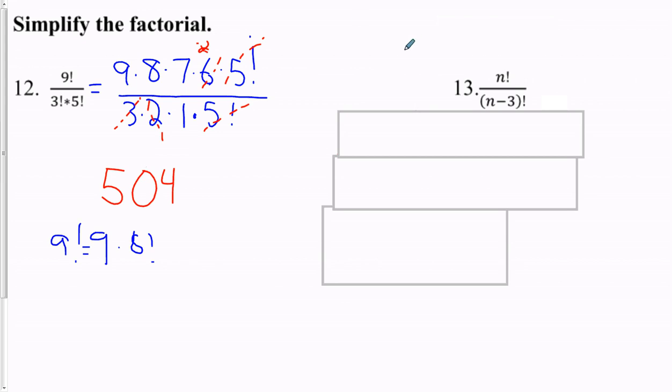Because how we would rewrite n factorial, as a reminder, would be n times n minus 1, then n minus 2, n minus 3. So we're just going to keep writing it. Well, how do you know when you're finished? Well, we want to just match the bottom. Because this would go eventually until 3 times 2 times 1.